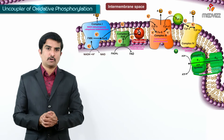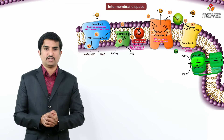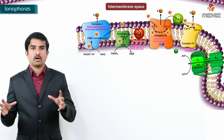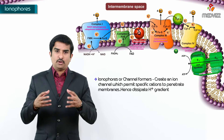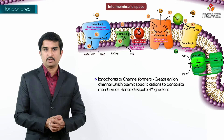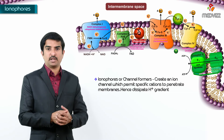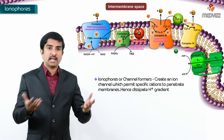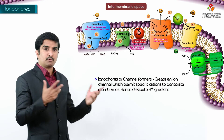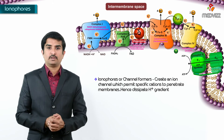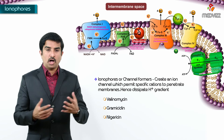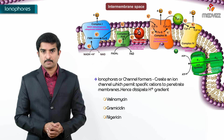The last concept is ionophores. Ionophores are channel formers — they create ion channels that permit specific cations to penetrate membranes. When specific cations penetrate the membrane, they dissipate the proton gradient. Like uncouplers, they disrupt the proton gradient, though by a different mechanism.